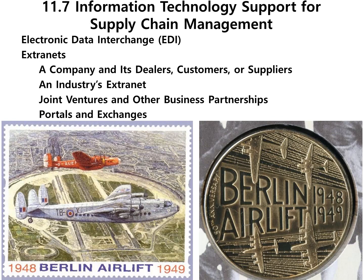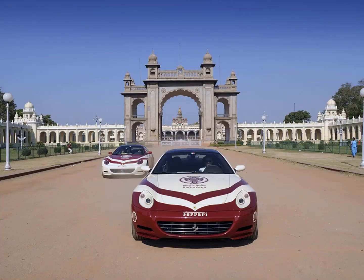The second major technology supporting supply chain management is an extranet — a controlled private network that allows access to partners, vendors, suppliers, or an authorized set of customers, normally to a subset of the information accessible from an organization's intranet. Extranets support the linking of business partners and use VPNs, or virtual private networks, to make communication over the Internet more secure — VPN allows you to work from home. Banner and Canvas are both examples of extranets. Extranets can support distribution portals that automate business processes involved in selling or distributing products from a single supplier to multiple buyers. India's automotive supply chain issues were resolved with the implementation of an extranet, paid for by India's OEMs (original equipment manufacturers), with the main benefit being efficiency.